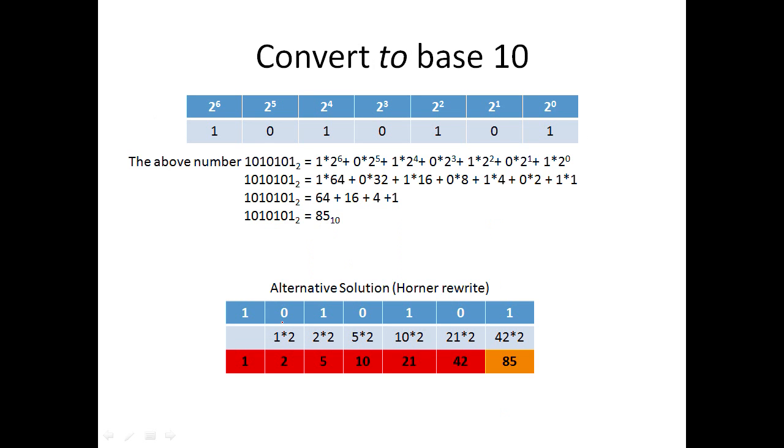Now let's say you want to convert to base 10. Using the previous example, you get the value of each digit by taking the digit times the base to the power of its position. So 1 times 2 to the 0th power, and you add every single one of these up.